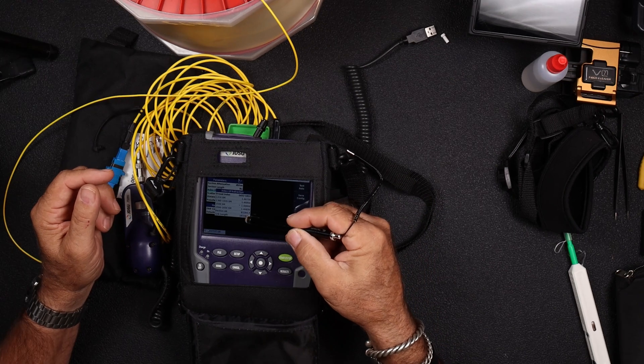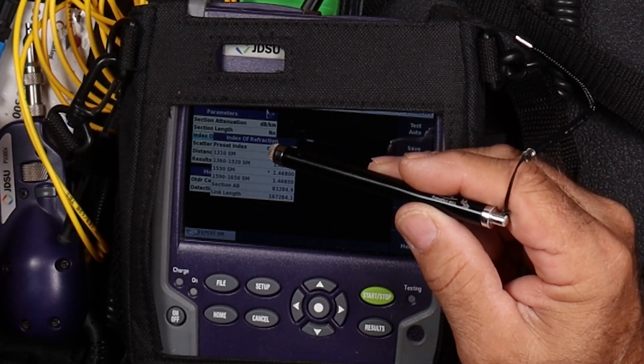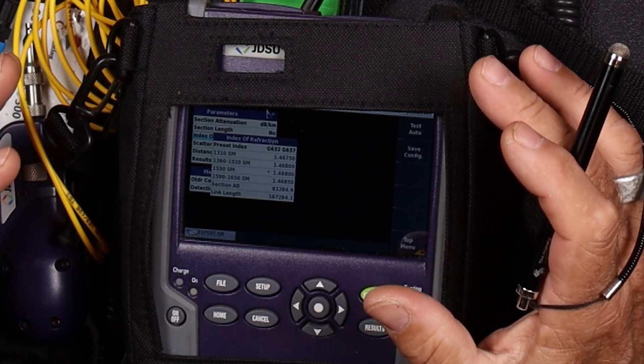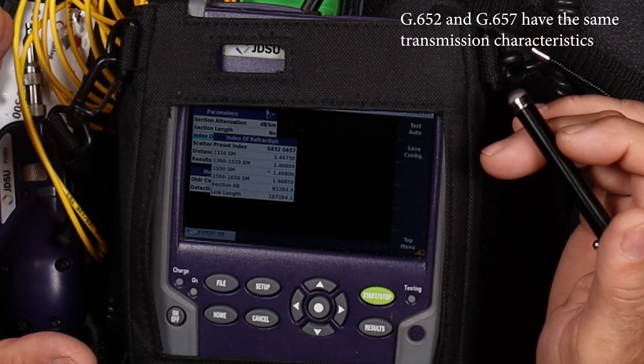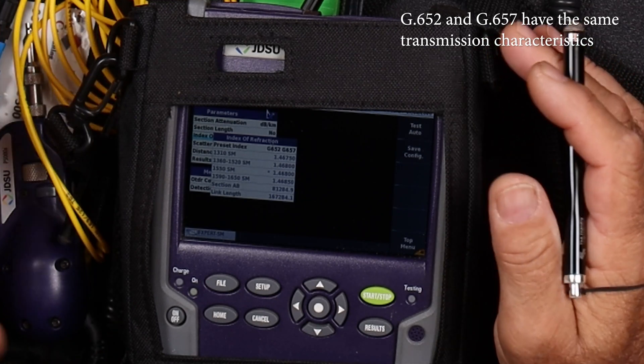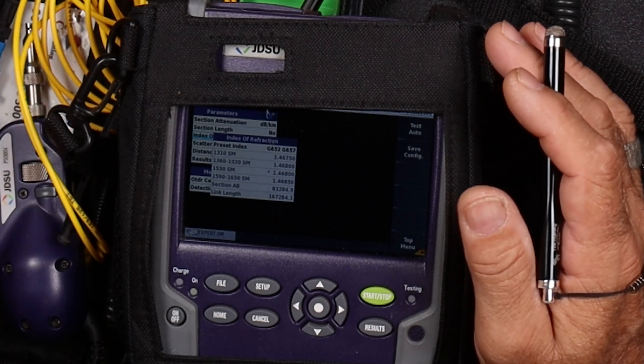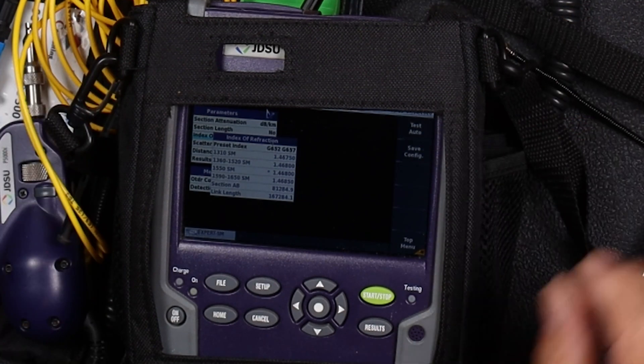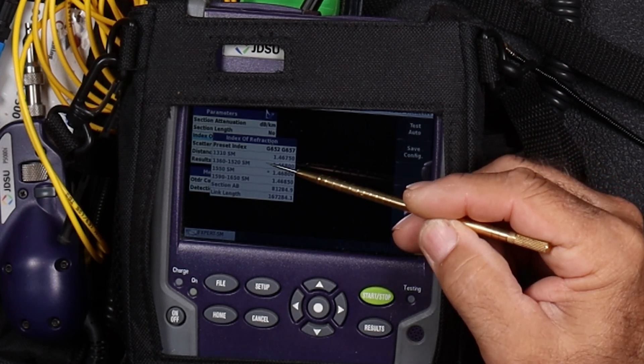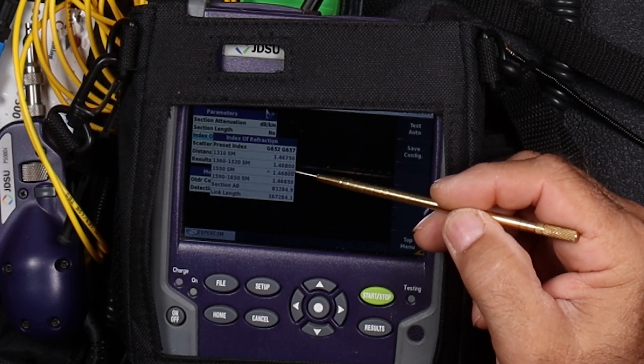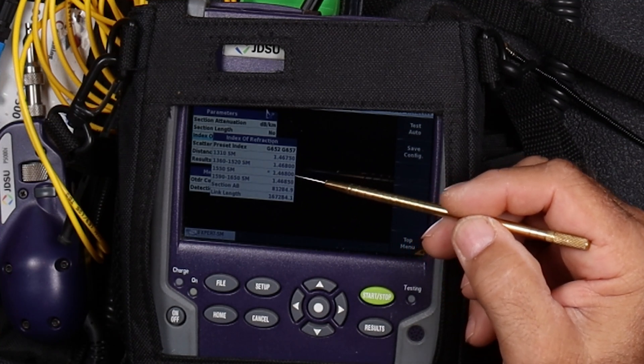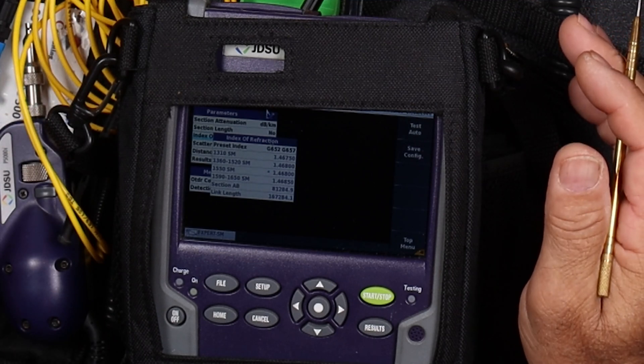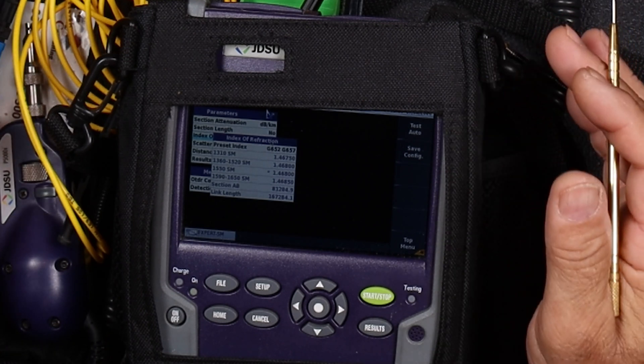If you look on the screen here, I'm looking at the index of refraction for a preset index of G.652 fiber or G.657. G.652 is a general purpose fiber and G.657 is general purpose but bend insensitive. You'll find this a lot in your fiber to the home type projects and PON projects. Each wavelength has its own index of refraction. At 1310, it's 1.4675. At 1550, it's 1.468. What that means is that light moves 1.468 times faster in a vacuum than it does through this G.652 glass.